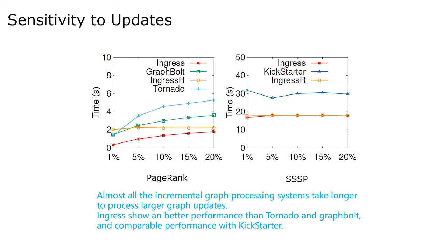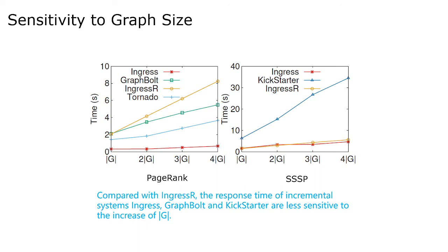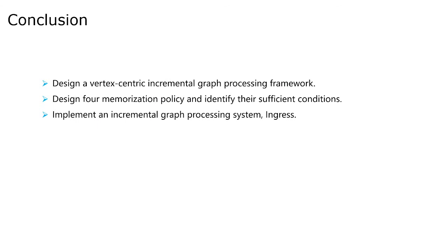We also conduct experiments to evaluate the impact of the size of the original graph. Compared with recomputation (Ingress-R), the response time for incremental systems — Ingress, GraphBot, and Kickstart — are less sensitive to the size of the original graph. To sum up, we design a vertex-centric incremental graph processing framework, design four memorization policies, and identify their sufficient conditions. Finally, we implement the incremental graph processing system Ingress. Thanks for your attention.